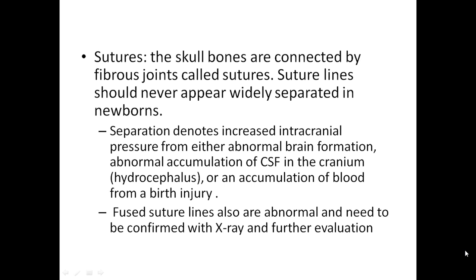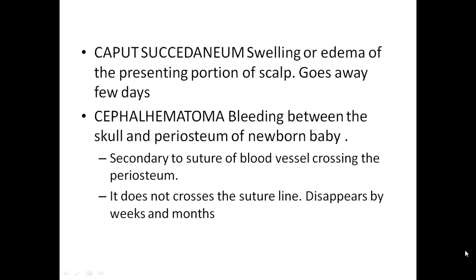Sutures. The skull bones are connected by fibrous joints called sutures. Suture lines should not appear widely separated in newborns. Separation may indicate increased intracranial pressure from abnormal brain formation, abnormal accumulation of CSF in the cranium, or accumulation of blood from birth injury. Fused suture lines are also abnormal and need confirmation with X-ray and further evaluation. Caput succedaneum is swelling or edema of the presenting portion of the scalp that goes away in a few days. Cephalohematoma is bleeding between the skull and periosteum, secondary to rupture of blood vessels; it does not cross the suture line and disappears over weeks to months.